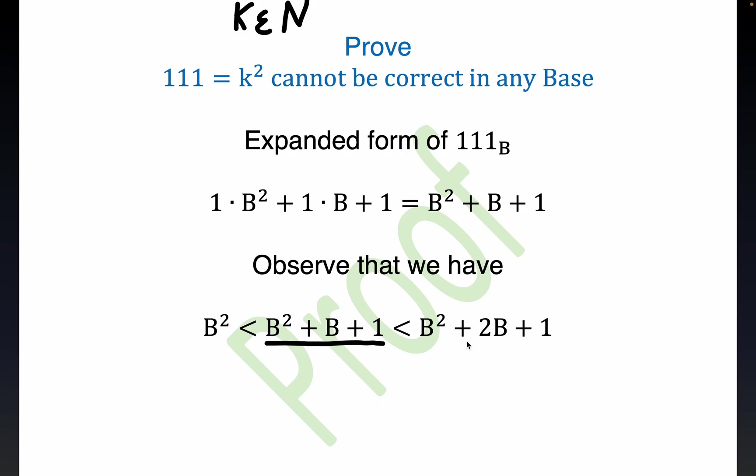But notice that this right hand side is manifestly larger than b squared plus b plus one. b squared plus two b plus one is certainly bigger than b squared plus b plus one as long as b is a positive integer. But notice that this right hand side here is just a simple factorization, b plus one quantity squared.